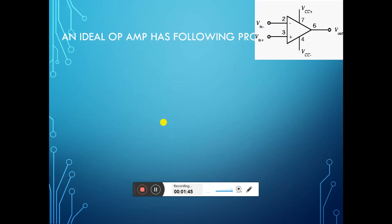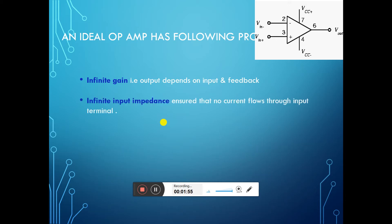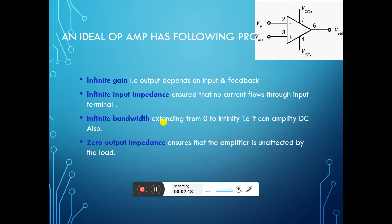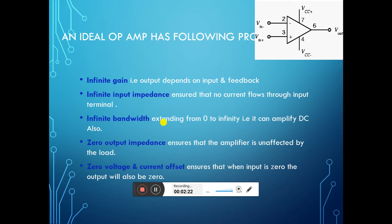Ideally, the op-amp has the following parameters. The infinite gain — the output depends upon the input and feedback, and its gain is infinite. Next is infinite input impedance, which ensures that no current is flowing through the input terminal. Infinite bandwidth extending from 0 to infinity means it can amplify DC signals also. Zero output impedance ensures the amplifier is unaffected by the load. The last parameter: voltage and current offset — if the input is 0, the output will also be 0.